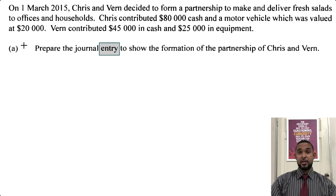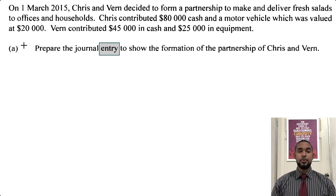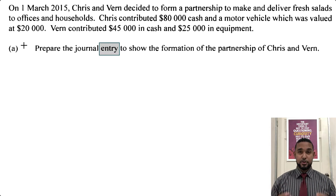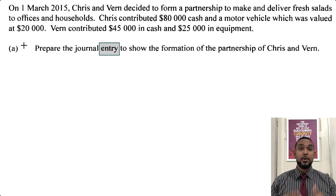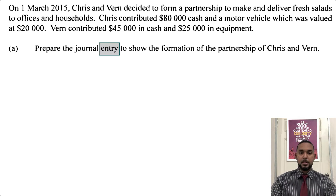It's interesting that they said 'the journal entry' because that implies one entry. What I'm going to show you are some options: first, recording each partner's contribution separately, and then how we could combine it into one entry — which could be called the compound entry. Let's focus on Chris first.